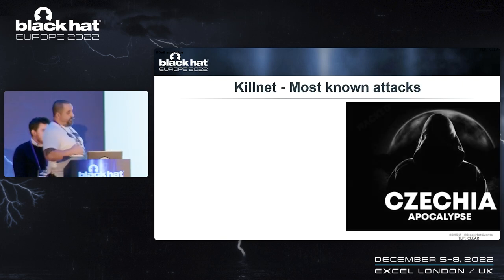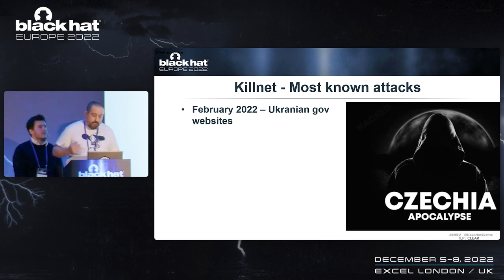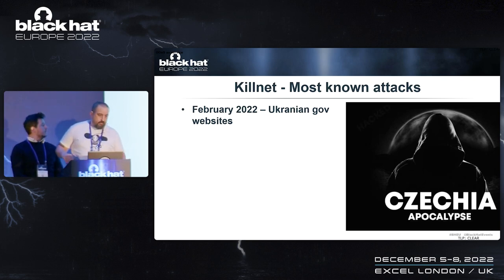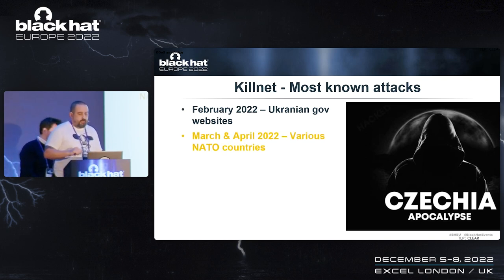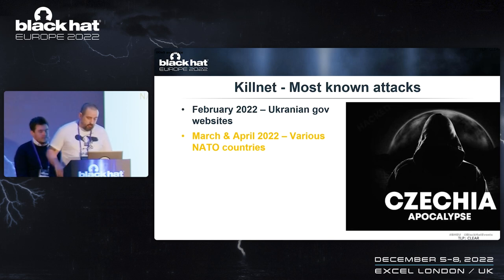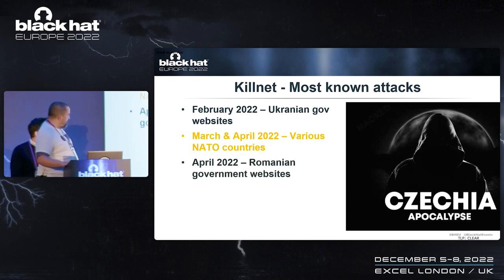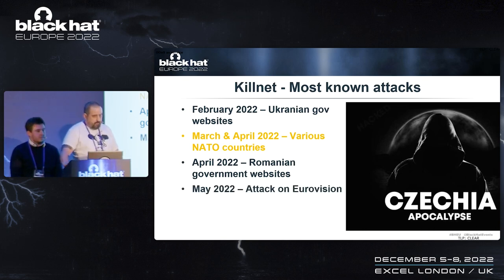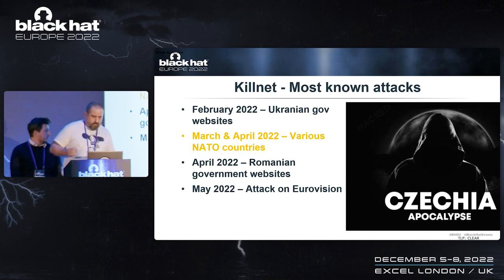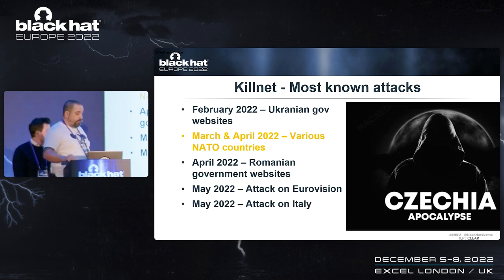Most known attacks by KillNet: obviously February 2022 — they took down some Ukrainian government websites with some leakage. For us very important: in April 2022, various NATO countries were attacked — Germany, United Kingdom, United States, Romania, Poland, and the Czech Republic of course. In April 2022 they unleashed their power on the Romanian government. In May 2022 there was a very interesting — though never actually successful — attack on Eurovision, which was very nicely promoted on KillNet's Telegram channel.